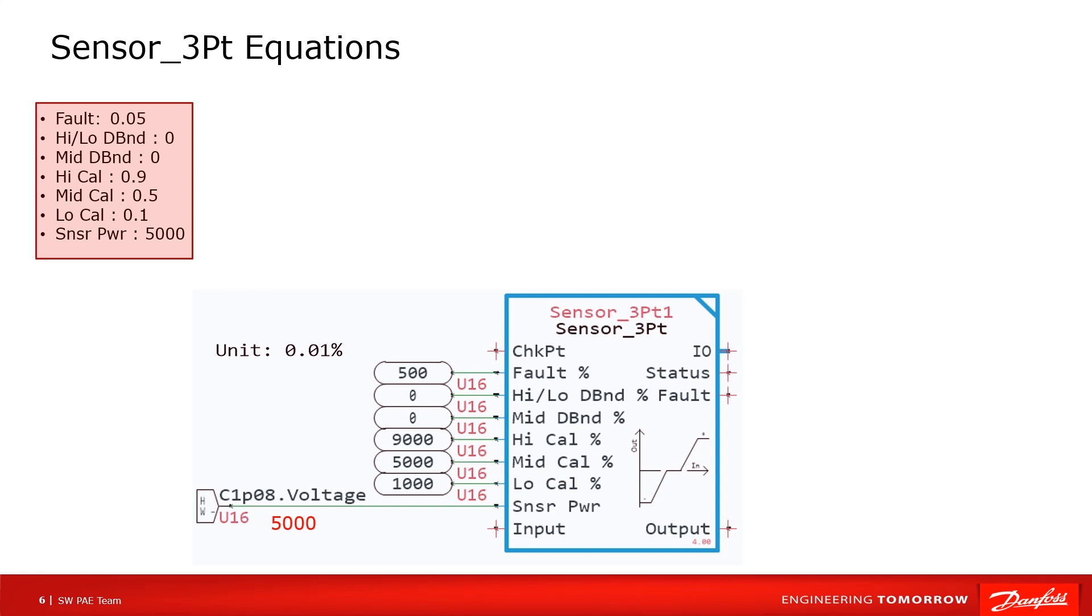Let's see how this block works. Assume the configuration as shown in slider. Fault percent is 500, dead band percent is zero. High, low, and middle calibration point is 9000, 5000, and 1000. Sensor power is 5000.